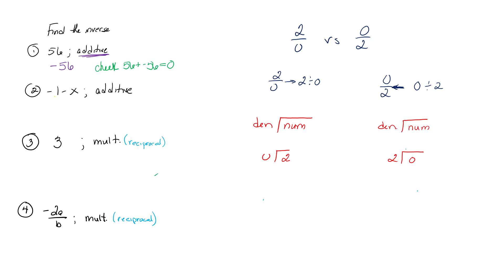Now let's take a look at the next one: the additive inverse of negative 1 minus x. Let's look at the check first. I need to add something to negative 1 minus x to make it equal 0. I can't add a number and a variable together, so I look at them separately. What do I add to negative 1 to zero it out? Positive 1. What do I add to negative x to zero it out? Positive x. So the additive inverse is positive 1 plus x.